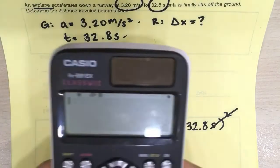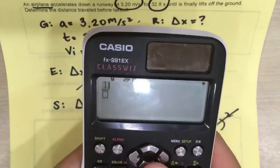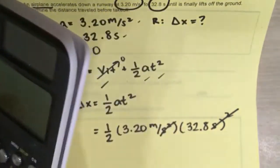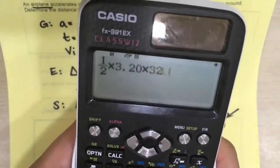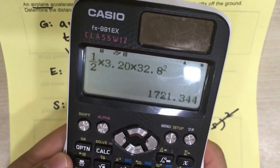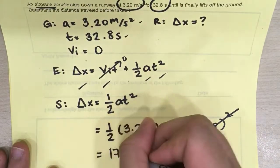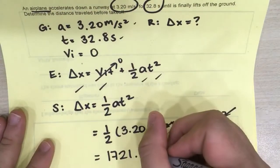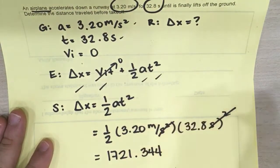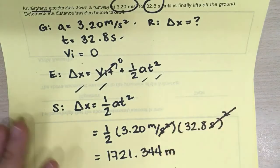Okay, so let's get my calculator real quick. So that's one-half times 3.20 times 32.8 squared. That will give me 1721.344. The unit now, because the seconds canceled out, was meters.